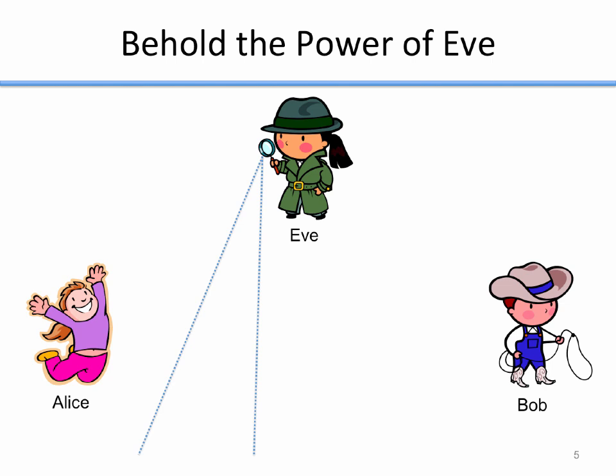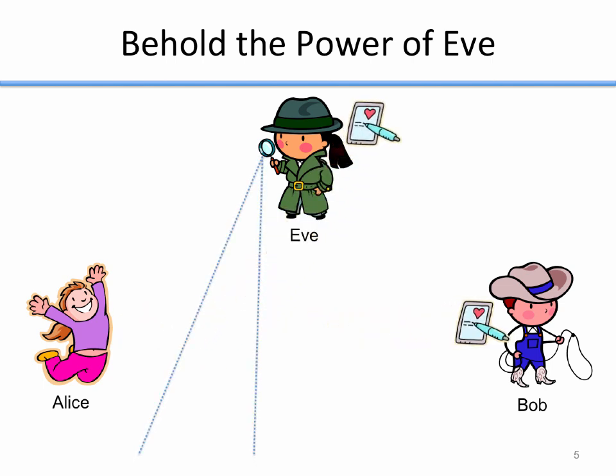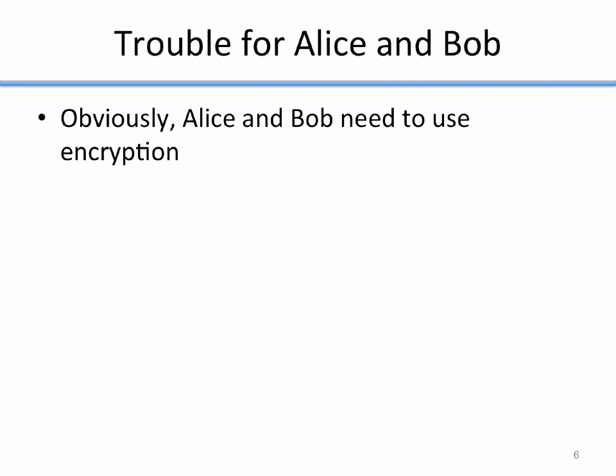Let's look at exactly what Eve can do. Alice takes her secret message that she wants to send to Bob. She doesn't encrypt it, she just sends it. And when she sends it across that insecure channel, it passes through Eve's vision and Eve makes a copy, because Eve can see everything that's communicated between Alice and Bob. That's bad, because Alice and Bob want confidential messages. So if Eve can see everything they do, we need at least some sort of encryption.